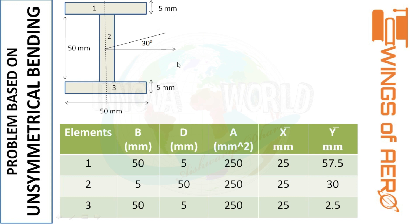Now considering y-bar. We take the reference from the top of the section. The total height is 55 mm. Half of the top flange thickness is 2.5 mm, so the y-bar for element 1 is 2.5 mm from the top. For element 2, the total web height is 50 mm, and half of it is 25 mm; adding 5 mm for the top flange gives y-bar as 30. For element 3, half the flange thickness is 2.5 mm from the bottom, giving y-bar as 57.5.